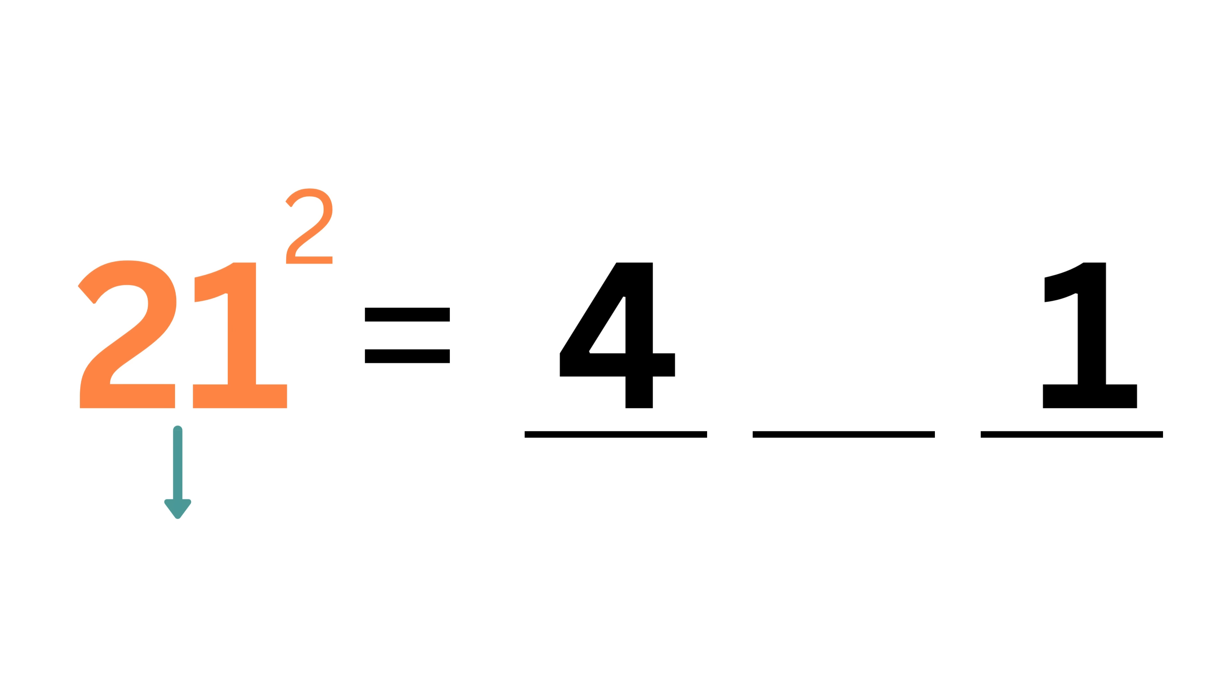Finally, the middle. Multiply the two digits together and double it. 2 times 1 is 2. Doubled is 4. The answer is 441. Simple, right?